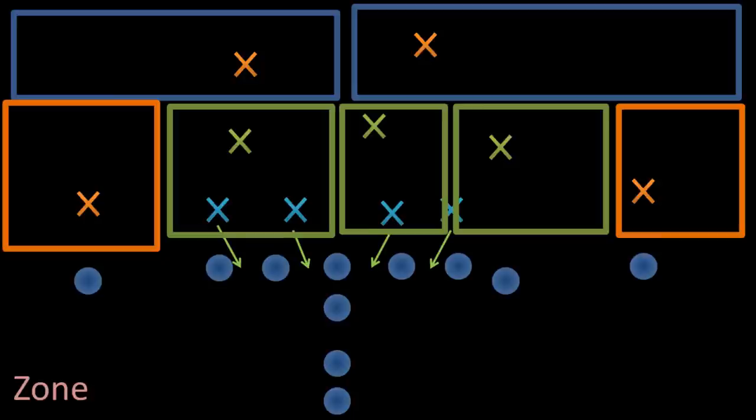Obviously, the weakness in zone defense is that things can get difficult when there is more than one receiver in your area to cover. This is why there are the different types of zone defenses.